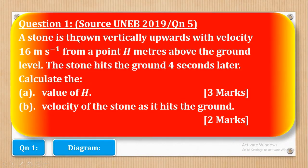Question 1 says: A stone is thrown vertically upwards with velocity 16 meters per second from a point H meters above the ground level. The stone hits the ground 4 seconds later. They want you to calculate: Roman numeral 1, the value of H, and Roman numeral 2, the velocity of the stone as it hits the ground.